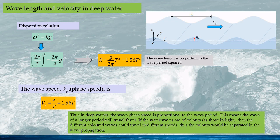If water waves had different colors for different wave frequencies, as in light, then the differently colored waves would travel at different speeds, and the colors would be separated during wave propagation — analogous to the dispersion of light.